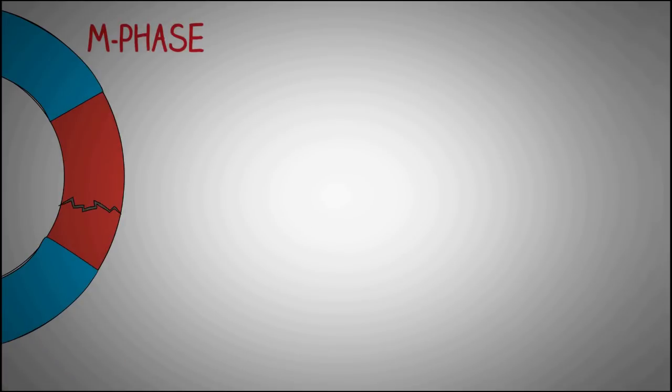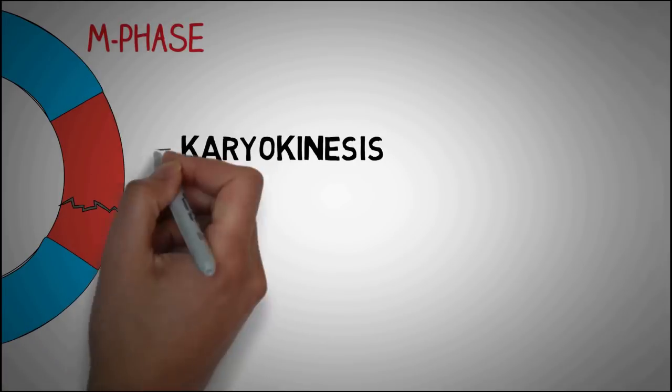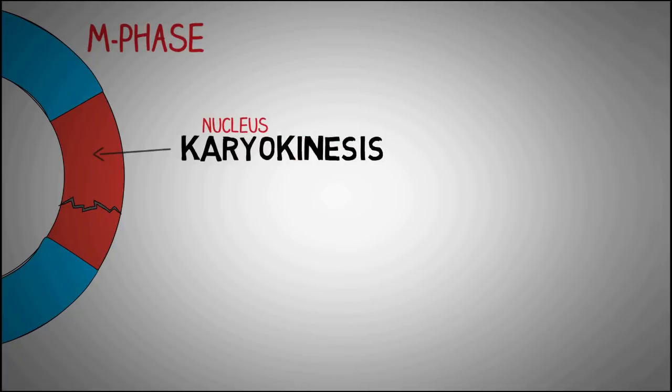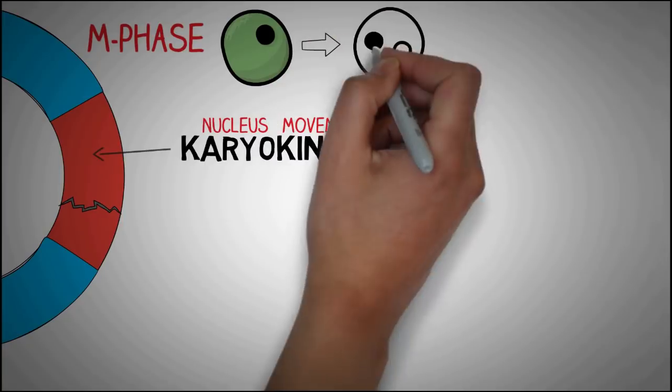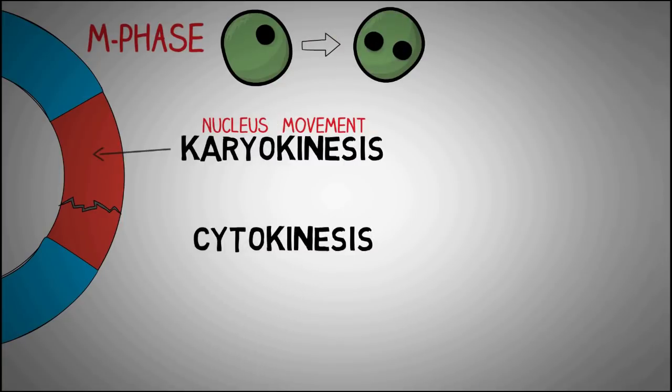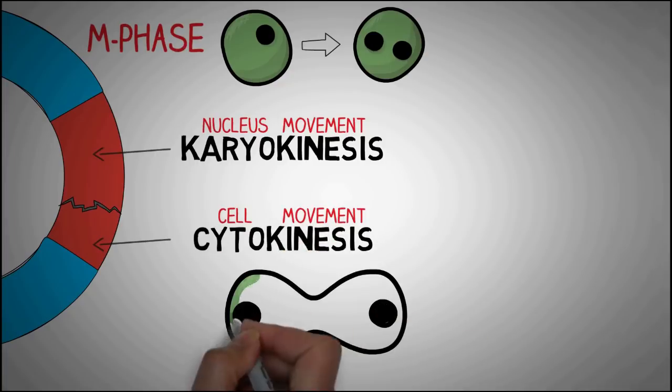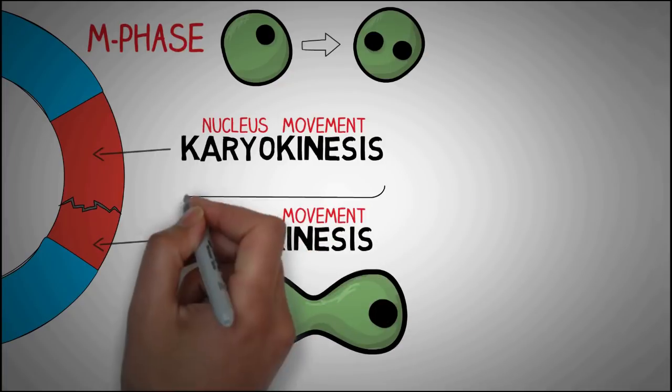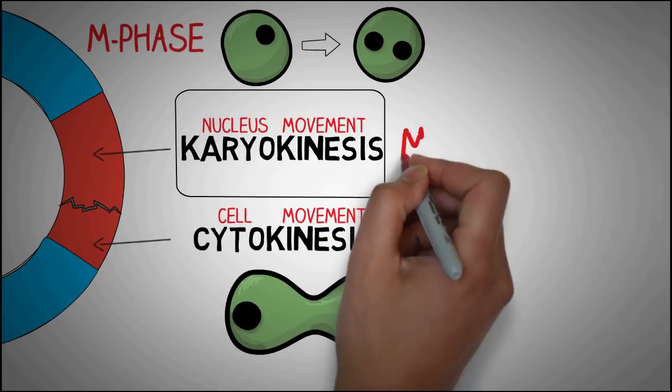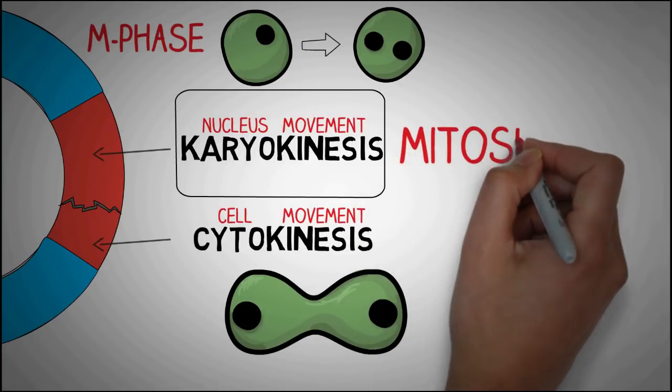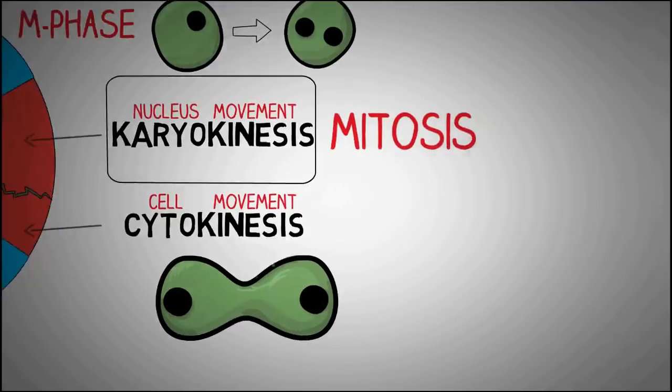The M phase is further divided into two phases, karyokinesis and cytokinesis. The word karyo means nucleus and kinesis means movement. So karyokinesis is movement or splitting of the nucleus and cytokinesis means cell movement or splitting of the cytoplasm. The karyokinesis or the nucleus splitting is also known as mitosis.